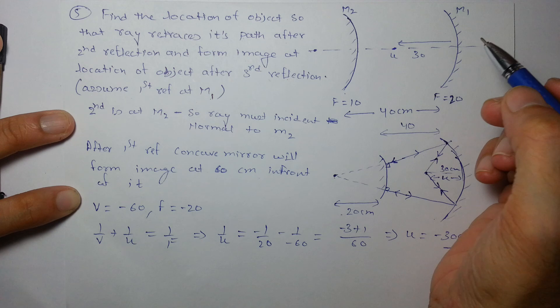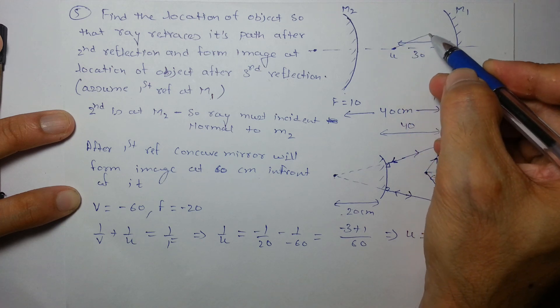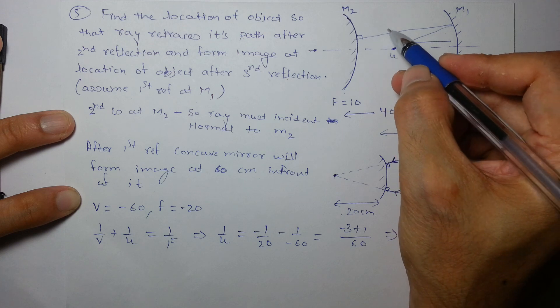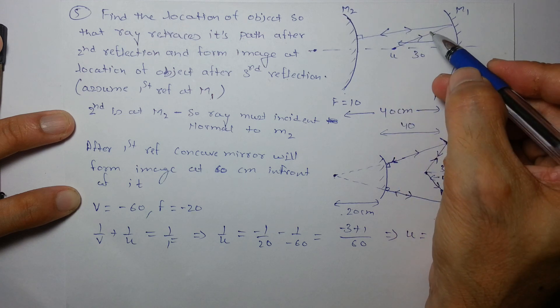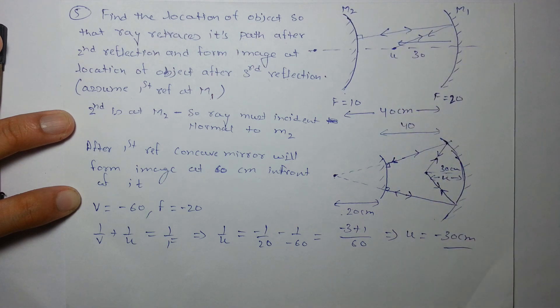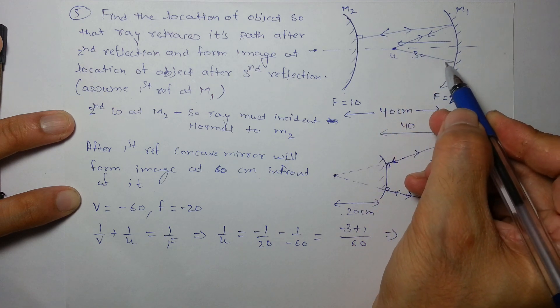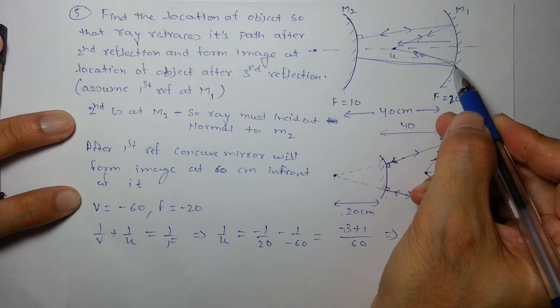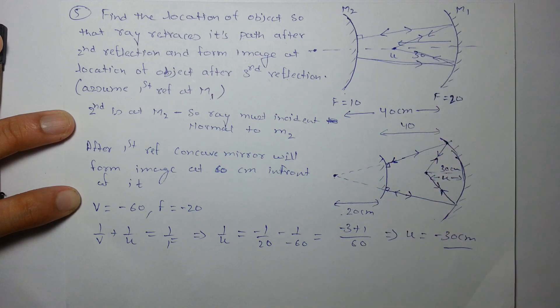This way there is no position where it has to be. On retracing, this image will form at the object itself. Okay, enjoy.